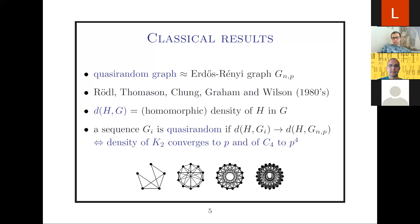The theory of quasi-random graphs goes quite far back in history — it can be traced to the 1980s. Most results I will present are from the early and late 80s, starting with results of Rödl, Thomason, Chung–Graham, and Wilson. Let me try to make sense of what it would mean for a sequence of graphs to be quasi-random. I want the sequence to look like a graph that could have been generated through the Erdős–Rényi random process.